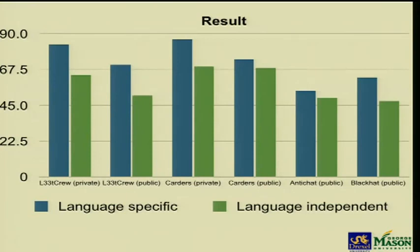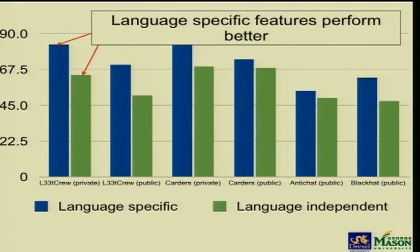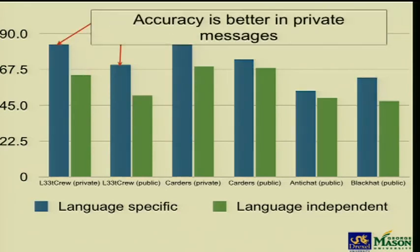This graph shows our authorship identification results on different forums with both language-specific and language-independent features. Language-specific features work better than language-independent features. We also saw that for one forum, accuracy on private messages was much better than on public messages. We think this is because private messages are more conversational, whereas public messages were mostly advertisement — short with very specific format — which is why our results were worse on public messages.